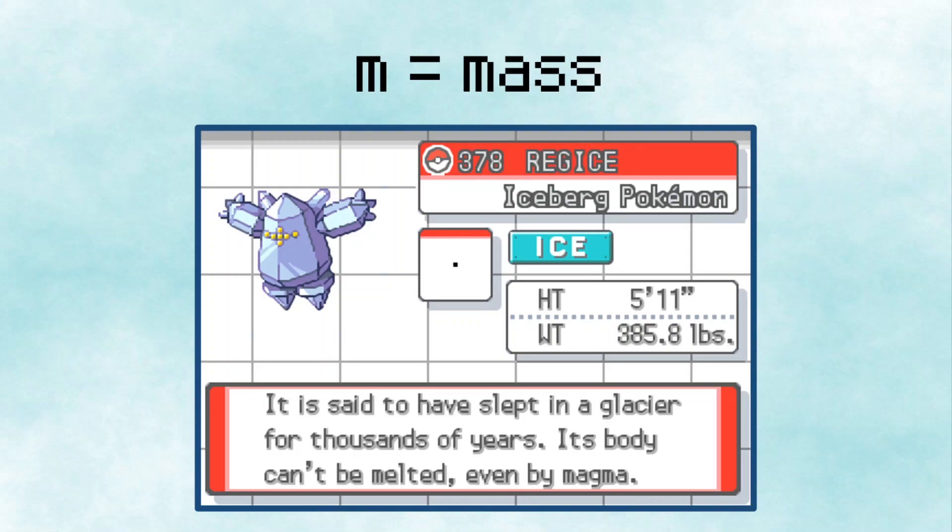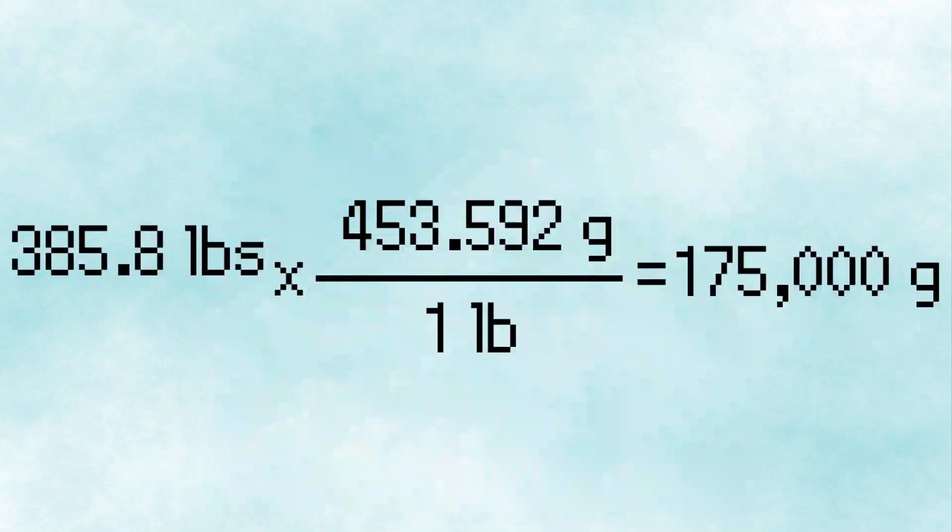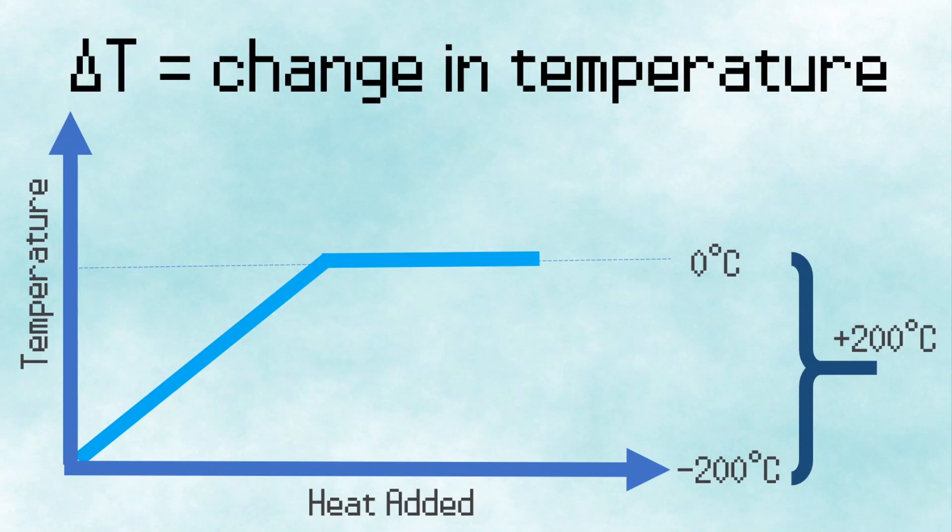Starting with M, we can figure out the mass of Regice from the Pokedex, which tells us it has a mass of 385.8 pounds. Doing some unit conversions, I figured out that Regice has a mass of 175,000 grams. For Regice's delta T, or change in temperature, we figured out earlier that we need to increase Regice's temperature by 200 degrees Celsius.